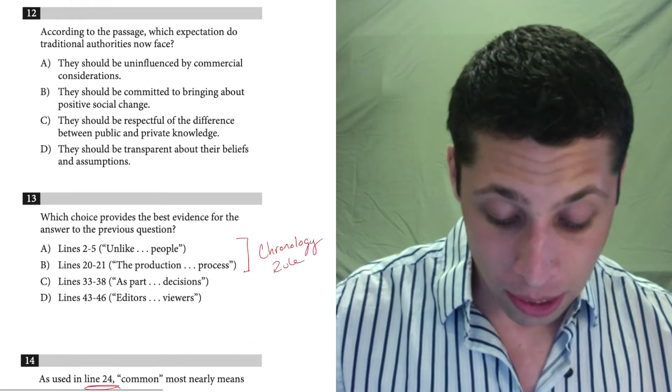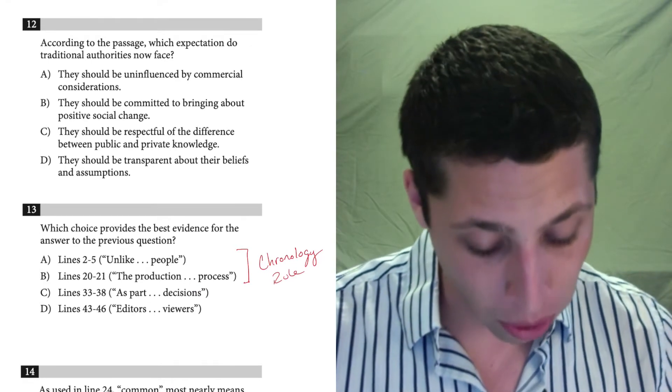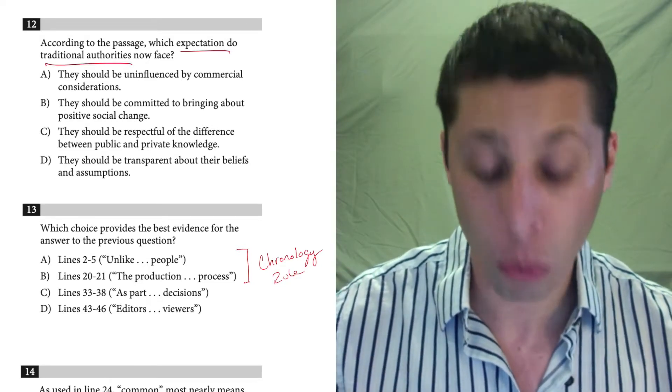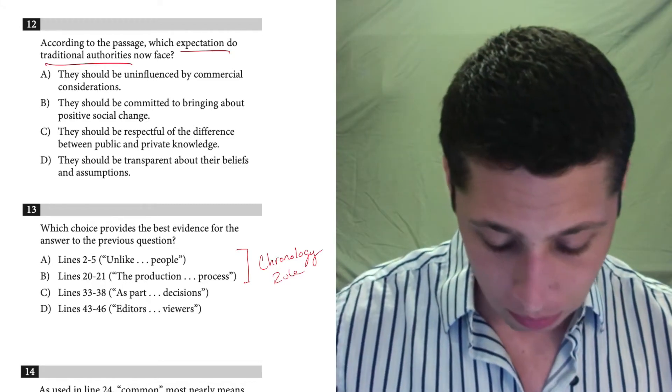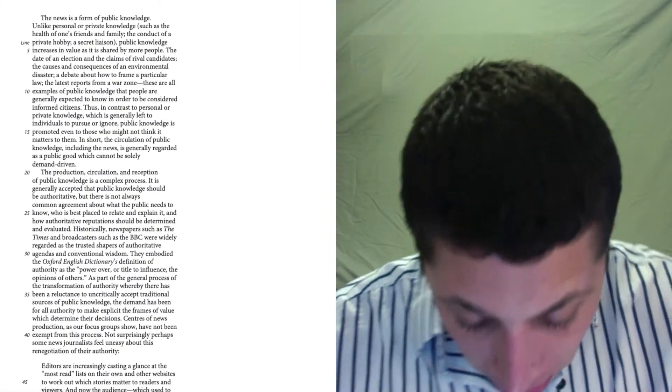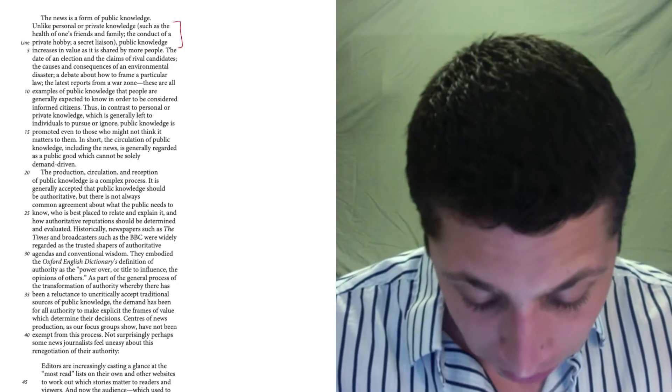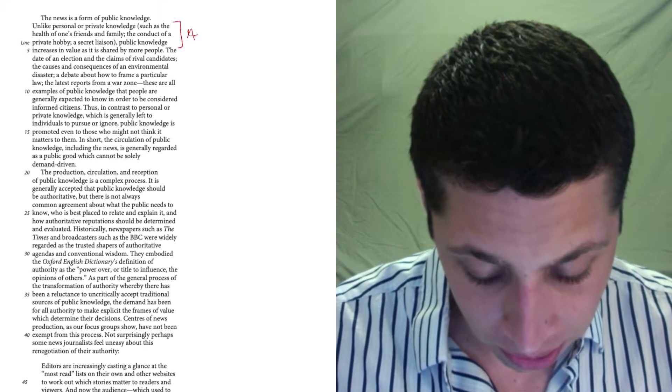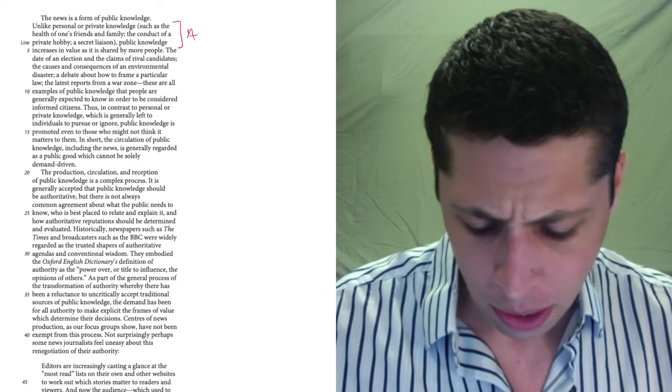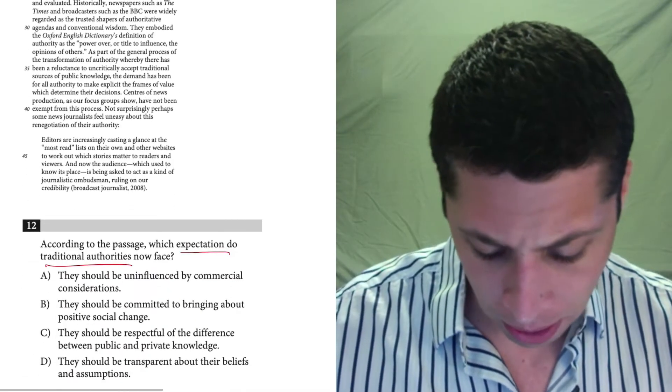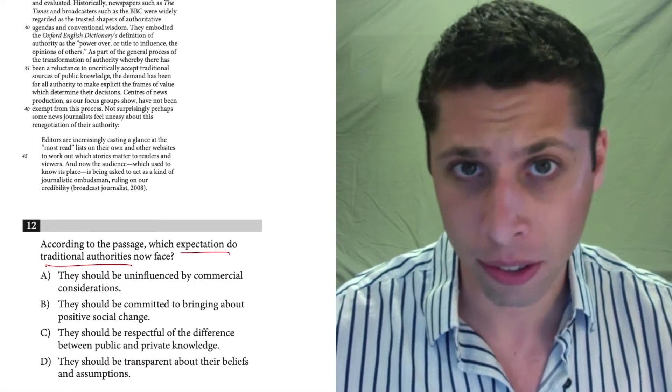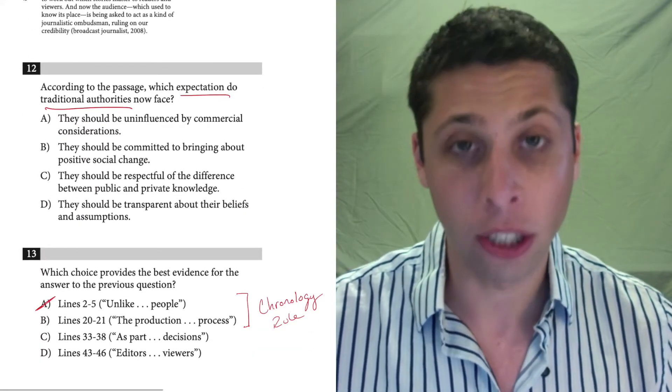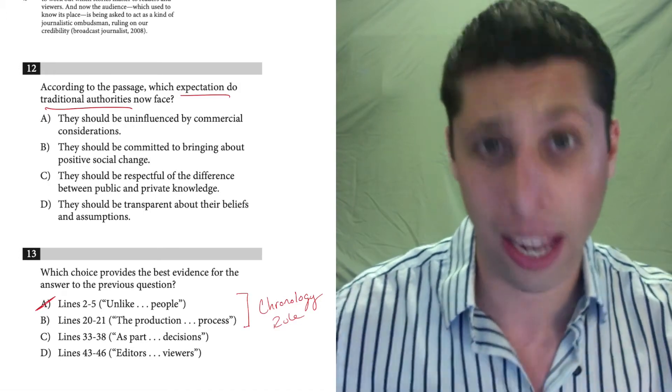So what would I do? I would now read the question from number 12 and make sure I understood what I'm reading for. I want the expectation that traditional authorities now face. So there's a couple of things that I could read for as I go through these line references. I'd start with two to five. Let's go up there. Unlike personal or private knowledge such as the health of one's friends and family, the conduct of a private hobby, a secret liaison, public knowledge increases in value as it is shared by more people. Okay. Well, this is public versus private, but I don't see anything about any expectations that anyone has. I also don't see anything about any traditional authorities. So choice A here, line reference A is not looking good. It just feels like a kind of random definition that doesn't answer the actual question.